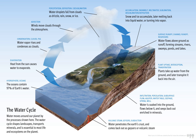Infiltration: the flow of water from the ground surface into the ground. Once infiltrated, the water becomes soil moisture or groundwater. A recent global study using water-stable isotopes shows that not all soil moisture is equally available for groundwater recharge or for plant transpiration.